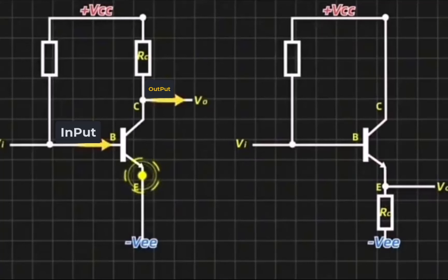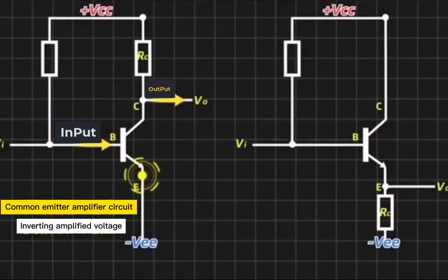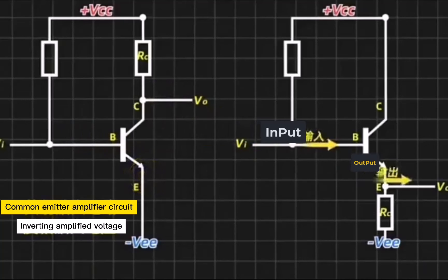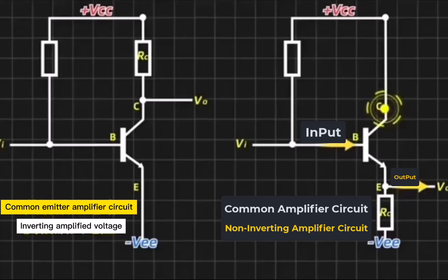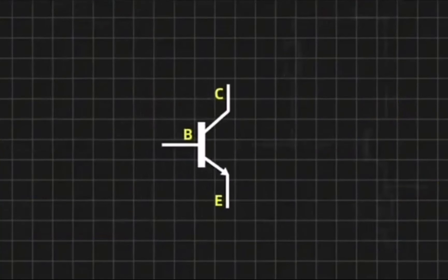The signal enters the base and outputs from the emitter. The input and output share the emitter, so it is called a common-emitter amplifier circuit. Its characteristic is that it amplifies voltage in the same direction. If the output is changed to the emitter and they share the base electrode, it is called a common-base amplifier circuit. Its characteristic is that it amplifies current in the same direction. What if the signal is changed to input from the emitter and output from the collector? What effect will it have if they share the same base electrode?